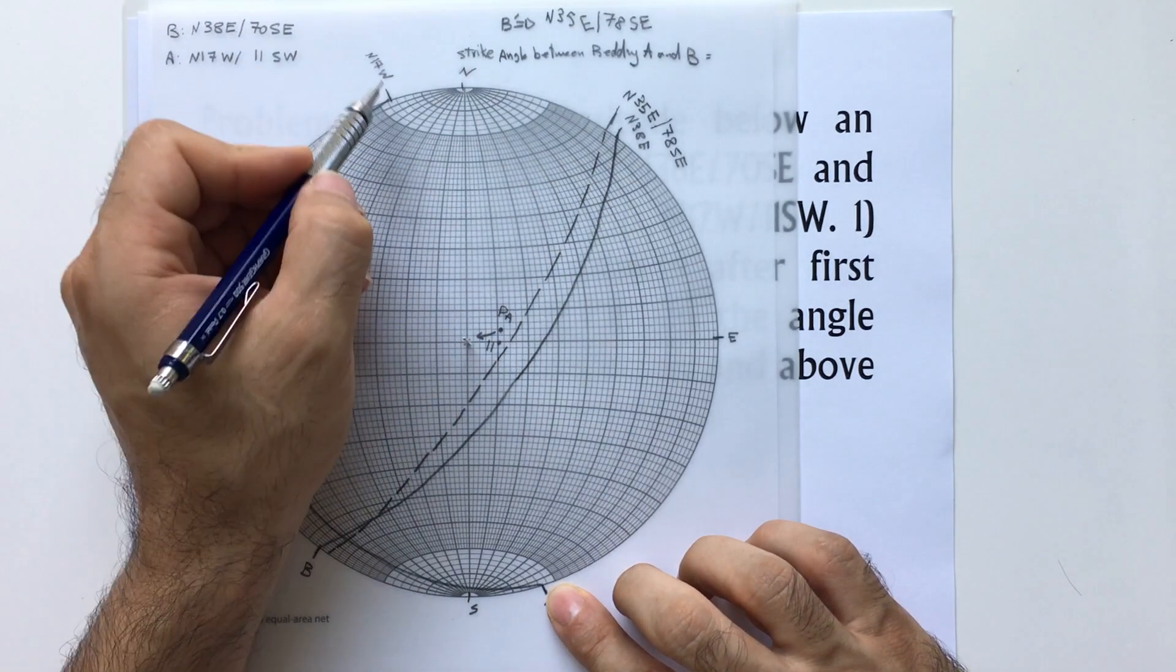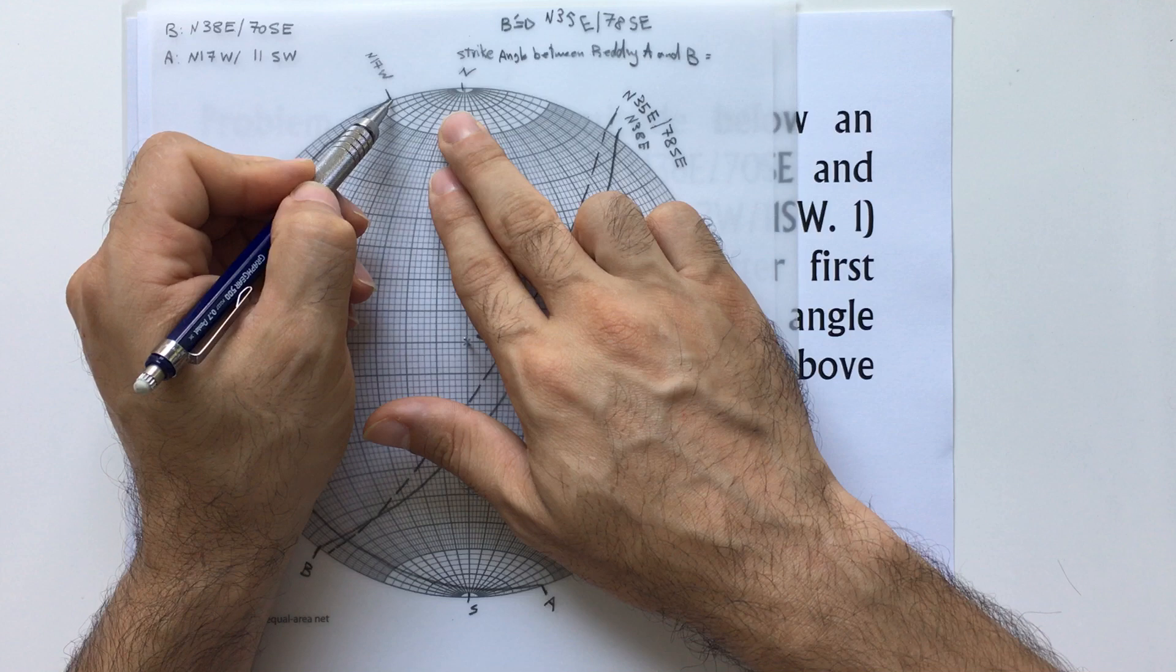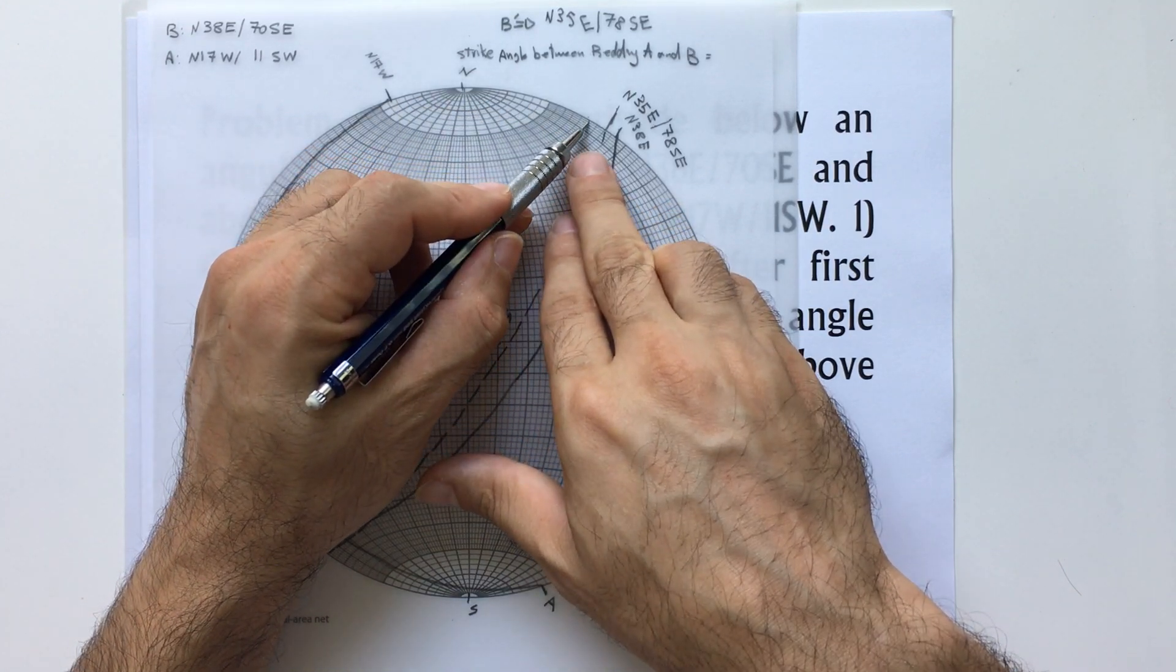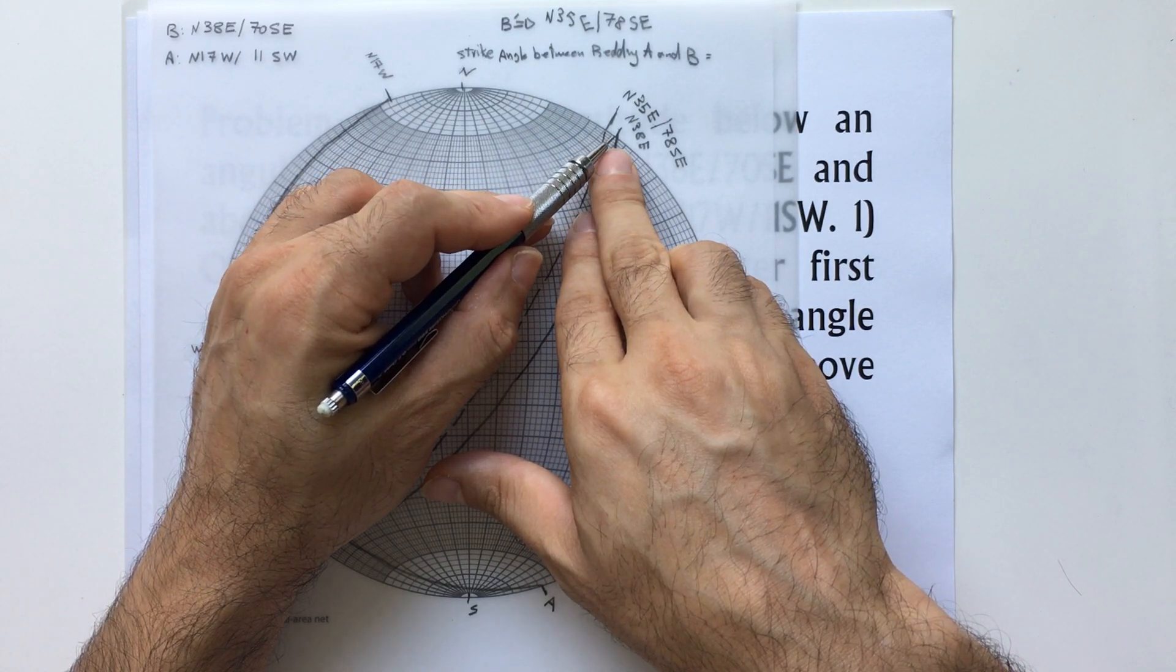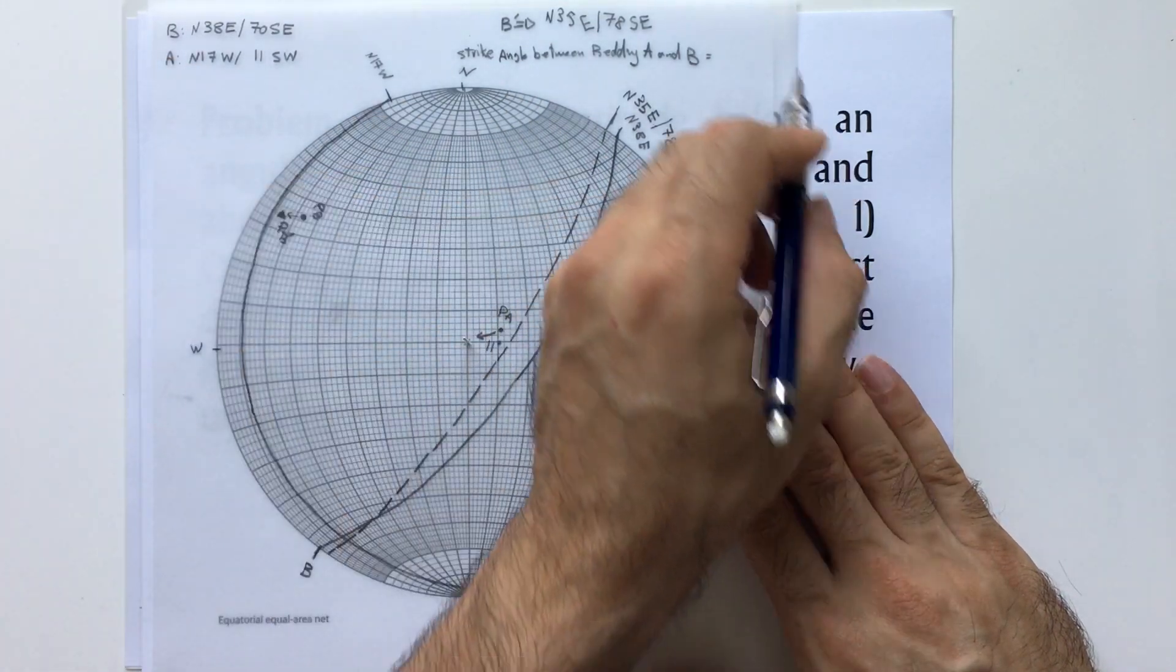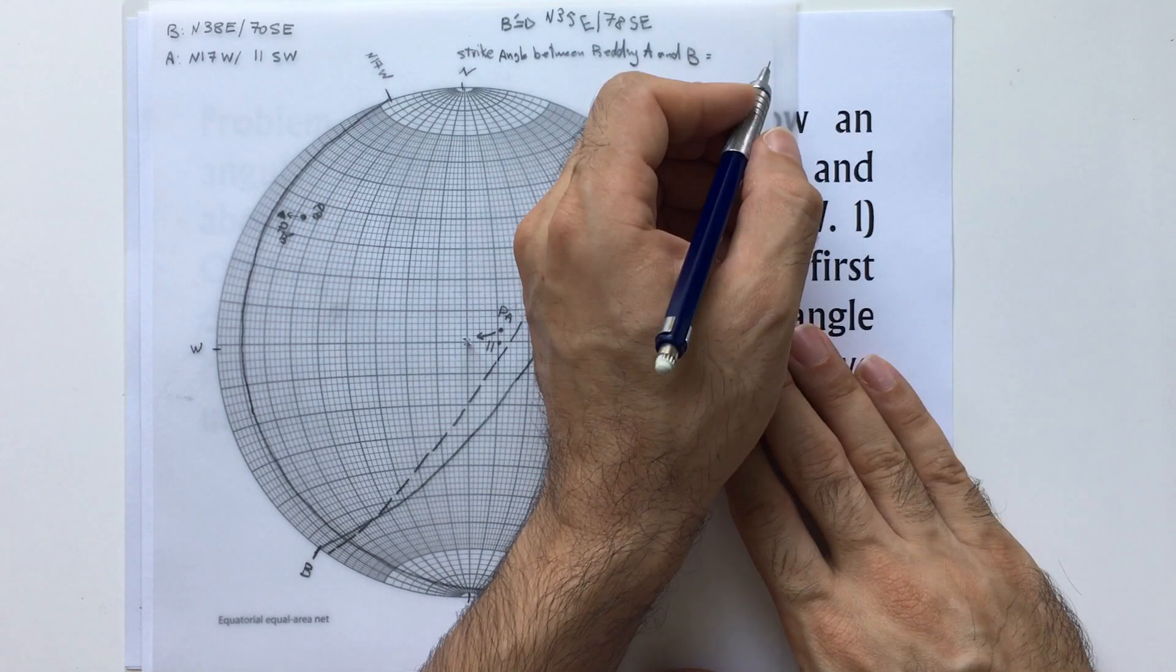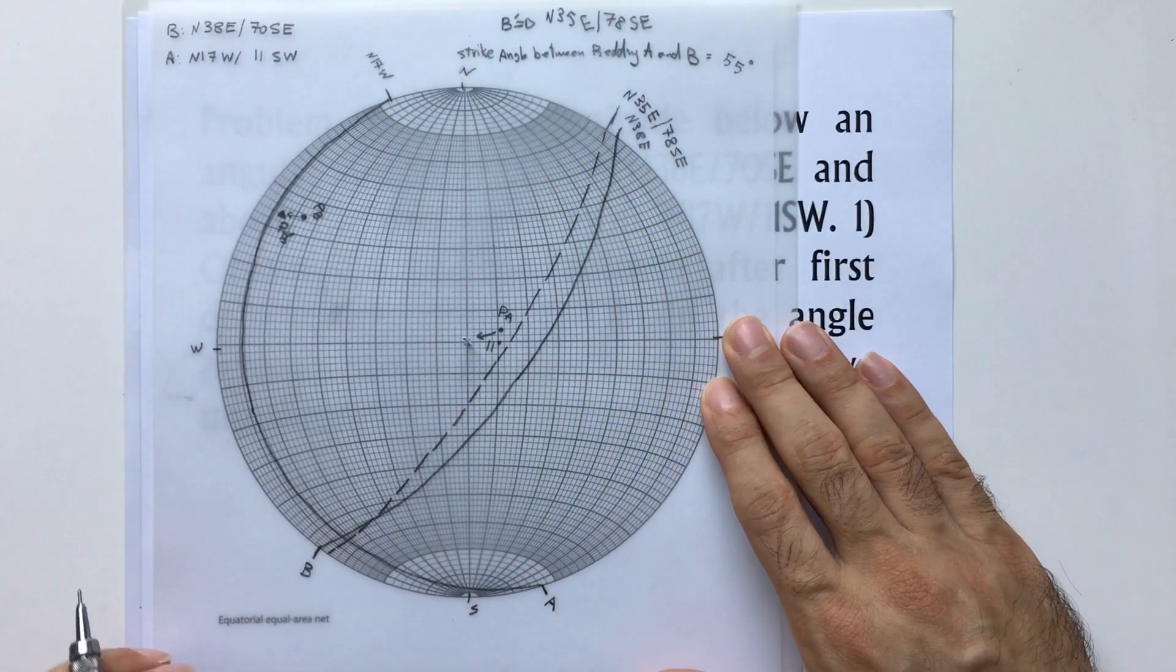Or you can count and see how many degrees it is: 7, 17, 27, 37, 47, 49, 51, 53, and 55. So the angle between these two is going to be 55 degrees.